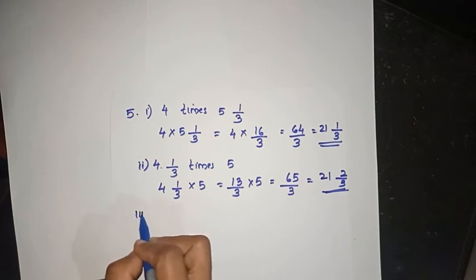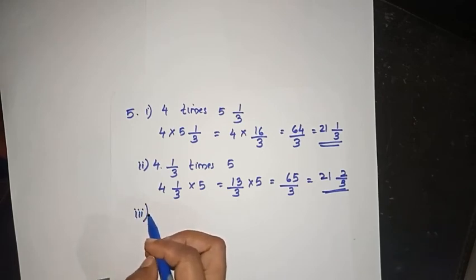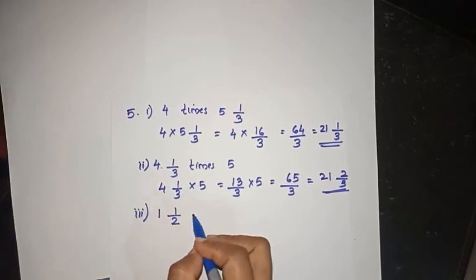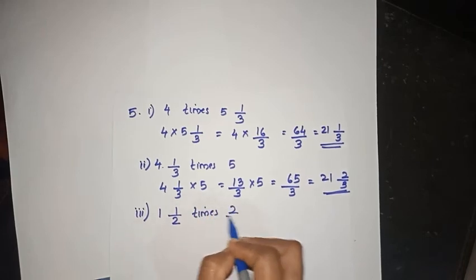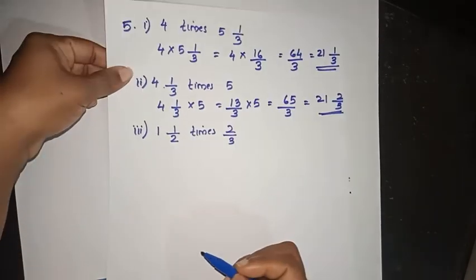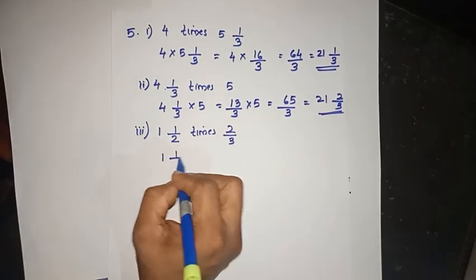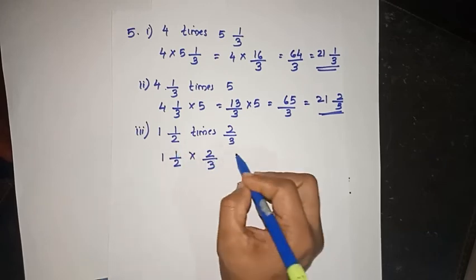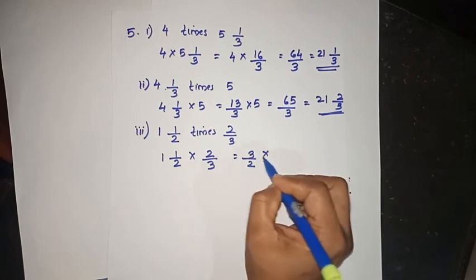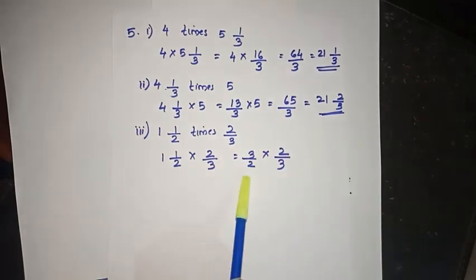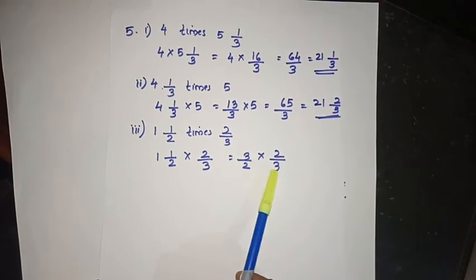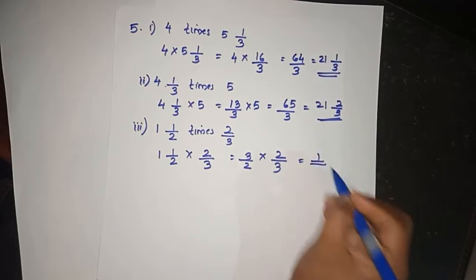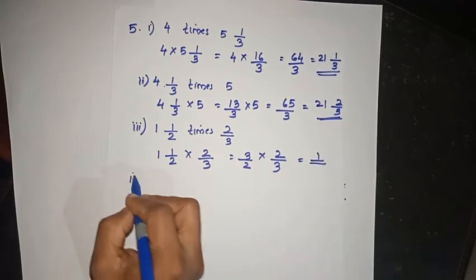Third question: 1 by 2 times 2 by 3. Convert: 2 plus 1 is 3, so 3 by 2 into 2 by 3. Numerator times numerator, denominator times denominator — the answer is 1.